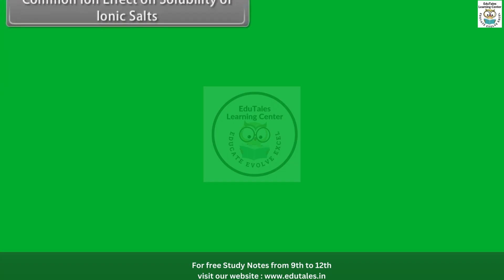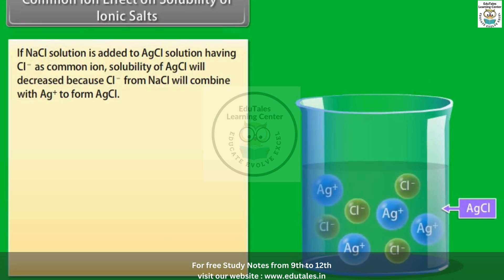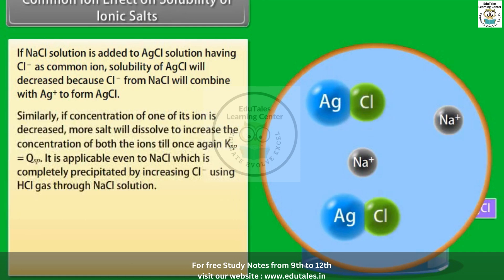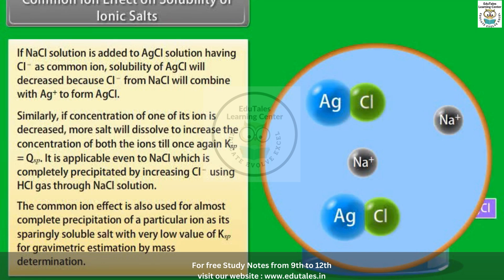Common ion effect on solubility of ionic salts. If NaCl solution is added to AgCl solution, Cl⁻ acts as the common ion; the solubility of AgCl decreases because Cl⁻ from NaCl combines with Ag⁺ to form AgCl. If the concentration of one ion is decreased, more salt will dissolve until Ksp = Qsp again. The common ion effect is also used for almost complete precipitation of a particular ion as a sparingly soluble salt with a very low Ksp value, for gravimetric estimation.